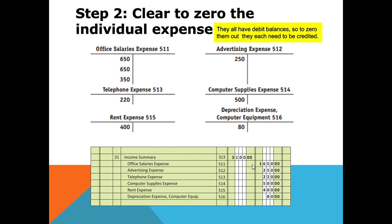Adding up $1,650, $250, $220, $500, and $480 gives $3,100 total operating expenses. That $3,100 is what you debit into income summary. So for step two, you always debit income summary for the total operating expenses and credit each individual expense account.